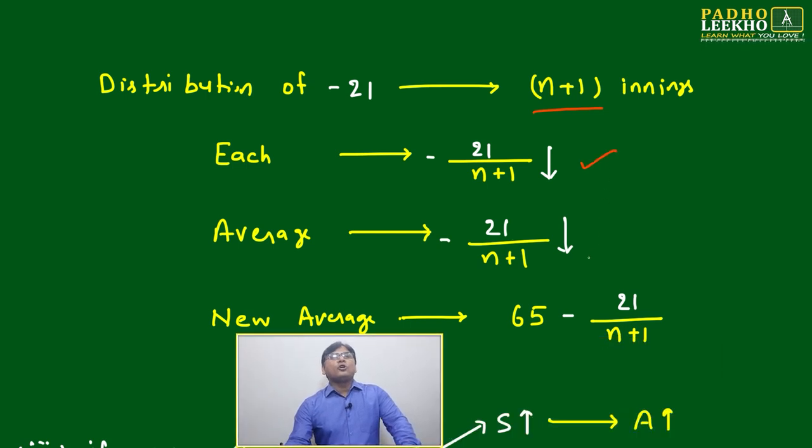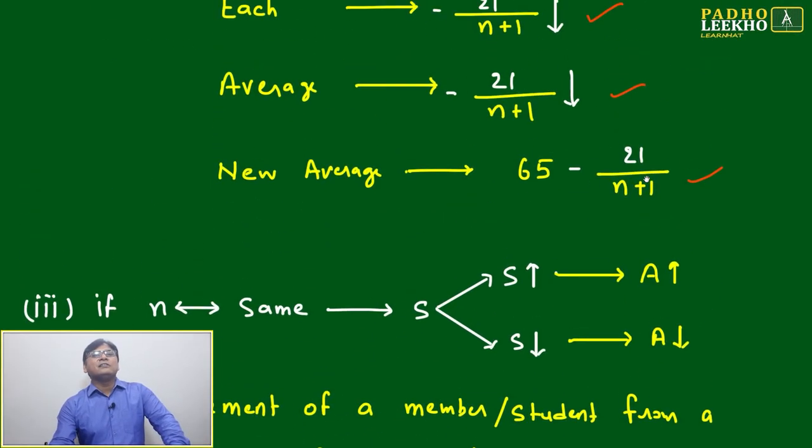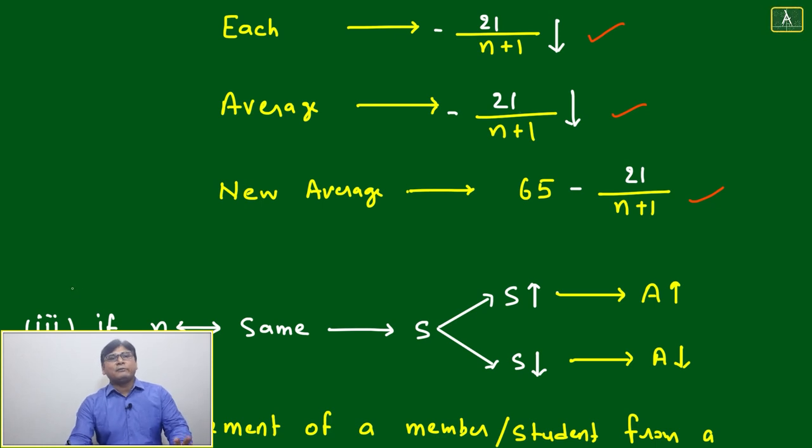Average will go down by this amount. Again, we can analyze here if you want to analyze in the same way: 21 divided by n+1. n+1 can be a factor of 21.